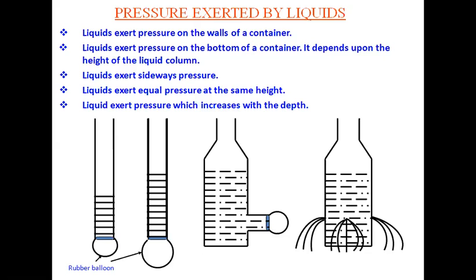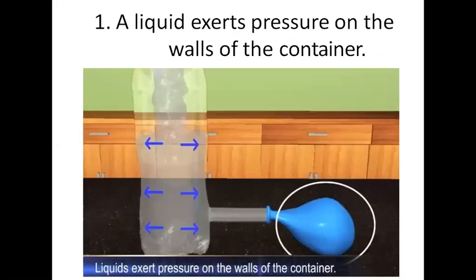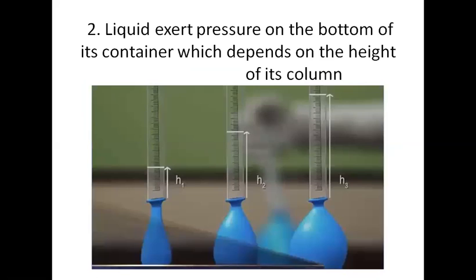To understand these activities better, let's take some examples. In the first example, there is a container with a rubber balloon attached at its side. The bulge in the balloon indicates that the liquid is exerting pressure on the walls of the container. In the second case, a balloon is fixed at the bottom of three different containers, and the pressure a liquid exerts on the bottom depends upon the height of the liquid in the container.